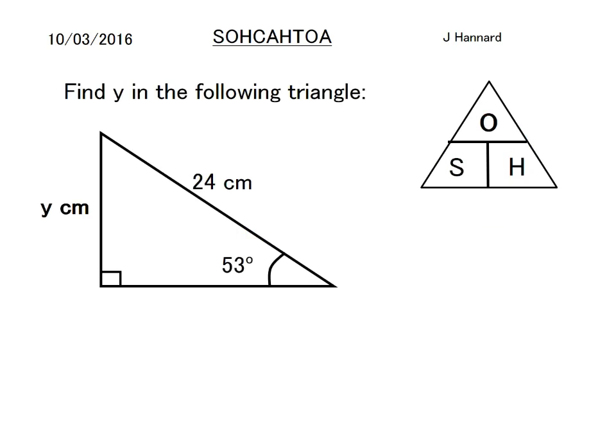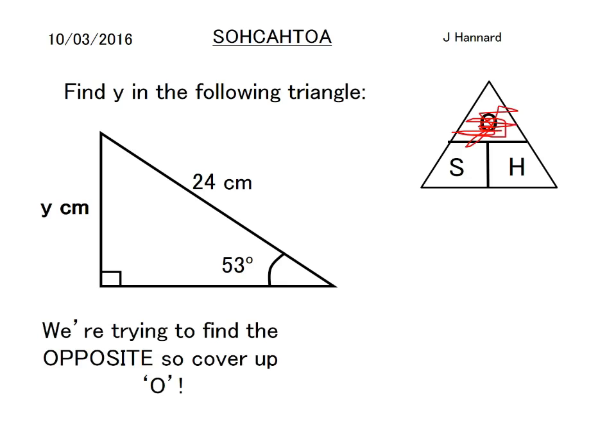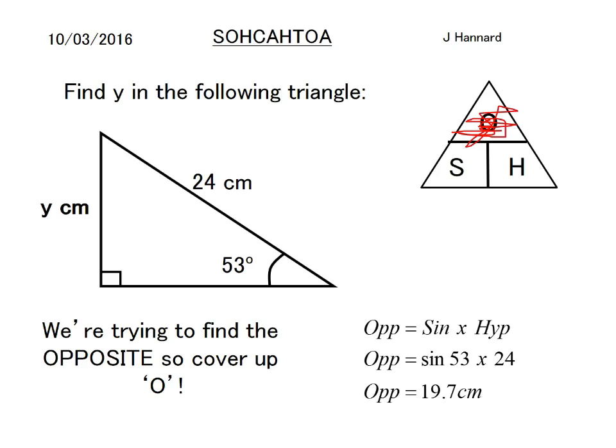Let's do an example. Find y in the following triangle. y is the opposite in this case, so we'd cover up the opposite — it would be sine times the hypotenuse. So opposite equals sin × hypotenuse, which is sin 53° × 24, giving opposite equals 19.7 cm. Really straightforward — you should be okay with that.